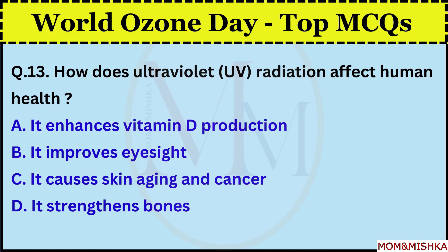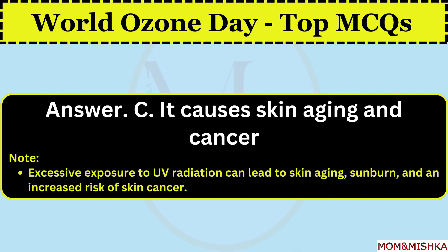How does ultraviolet radiation affect human health? It causes skin aging and cancer. Option C. Excessive exposure to UV radiation can lead to skin aging, sunburn, and an increased risk of skin cancer.